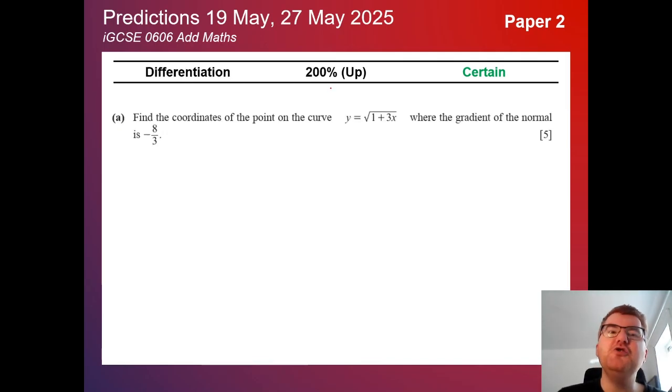Differentiation is huge on Paper 2. Again, this is a very typical question. As soon as you start seeing things like gradient of normal, you know there's going to be some differentiation.